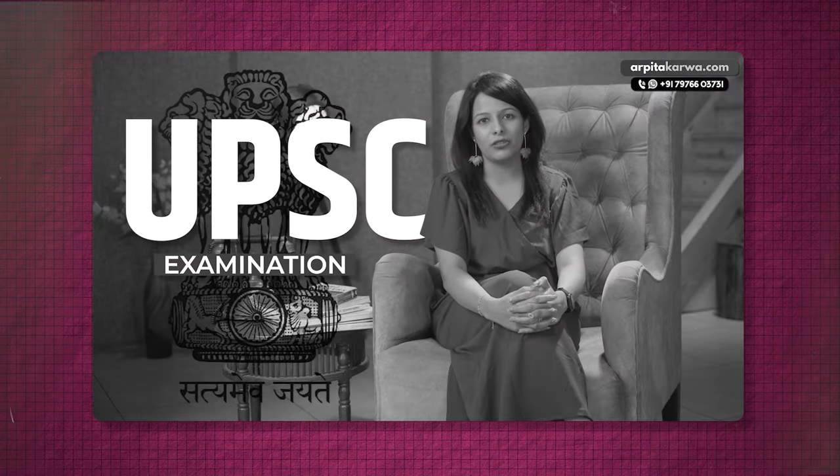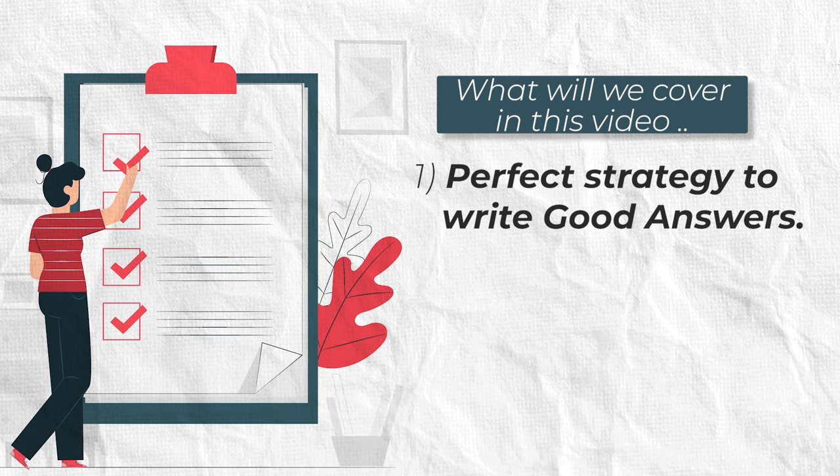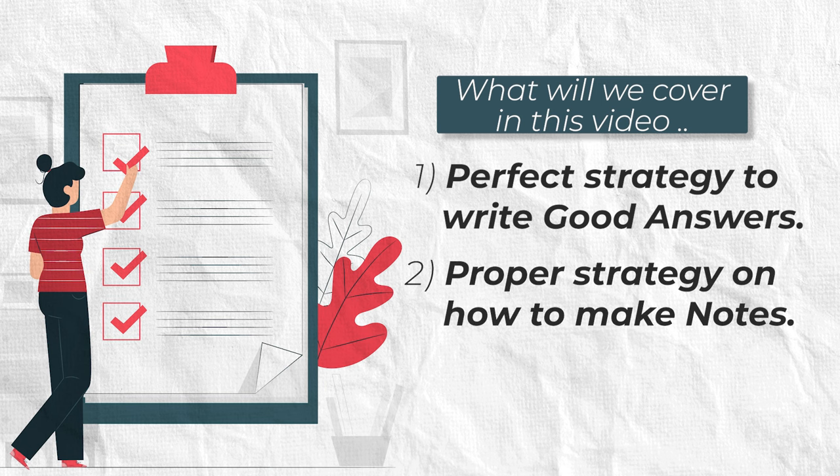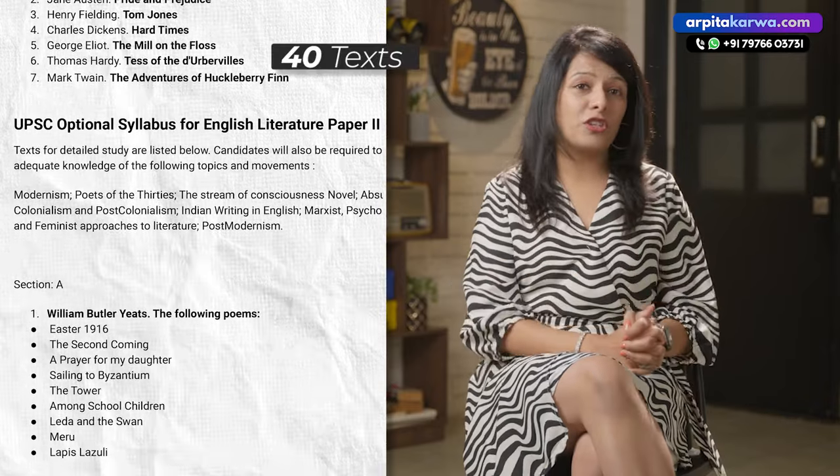I've already made a video on how to approach the syllabus of UPSC English optional and how to prepare for it and what should be the right strategy. So if you are new to this channel, I would recommend you to go and watch that video — I have put it in the description box below. This video specifically will serve a dual purpose: I will not just share with you the perfect strategy to write good answers, but I'm also going to give you a proper strategy on how you can make notes which are easy to revise in less than 30 minutes, because there are more than 40 texts you have to cover and lengthy notes become very hard to revise and remember.